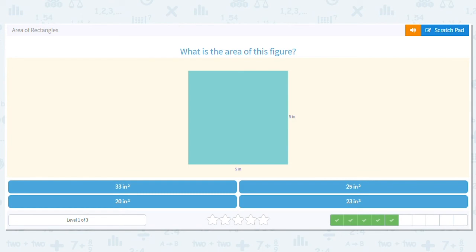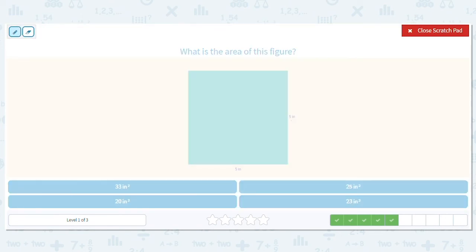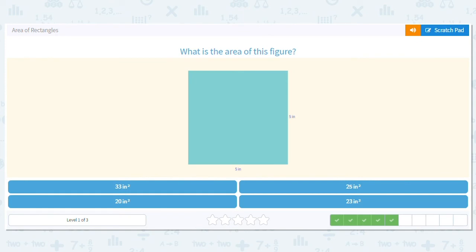This time, we have a square. What numbers do we have? We have five inches and five inches. So what's my multiplication problem? Five times five. What is five times five? Five times five is 25, 25 inches squared.